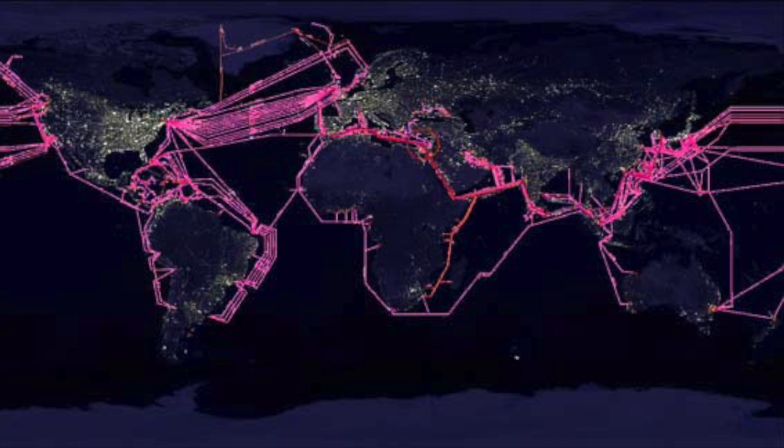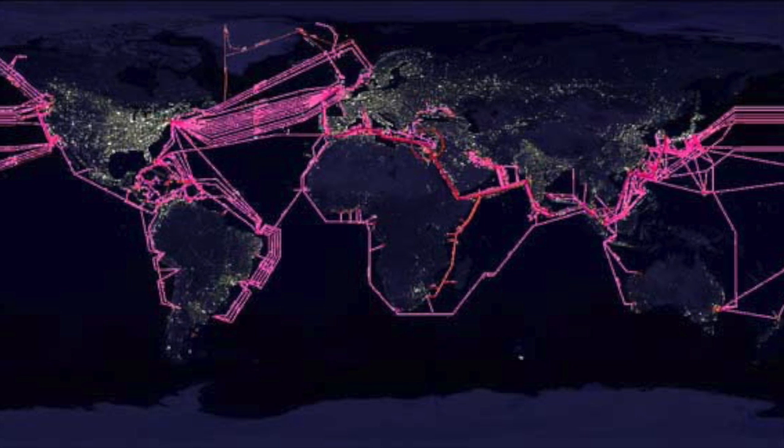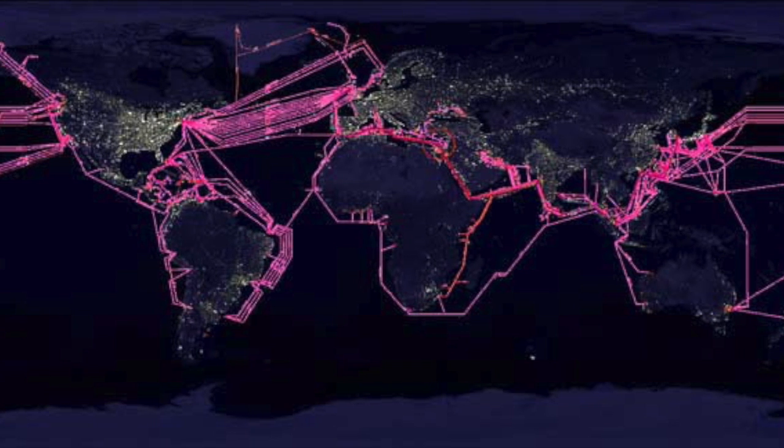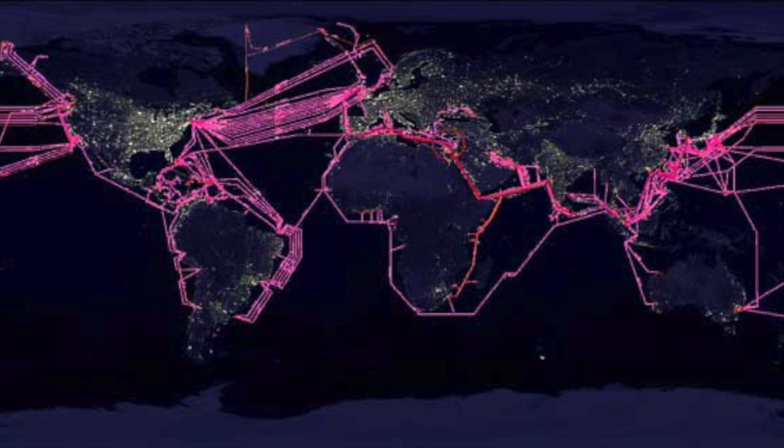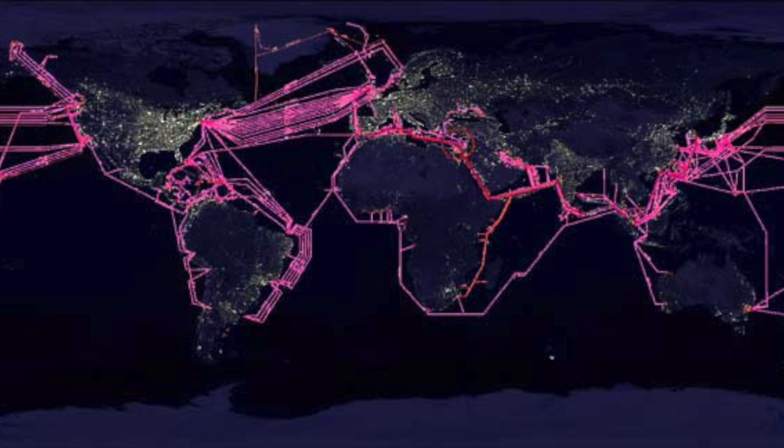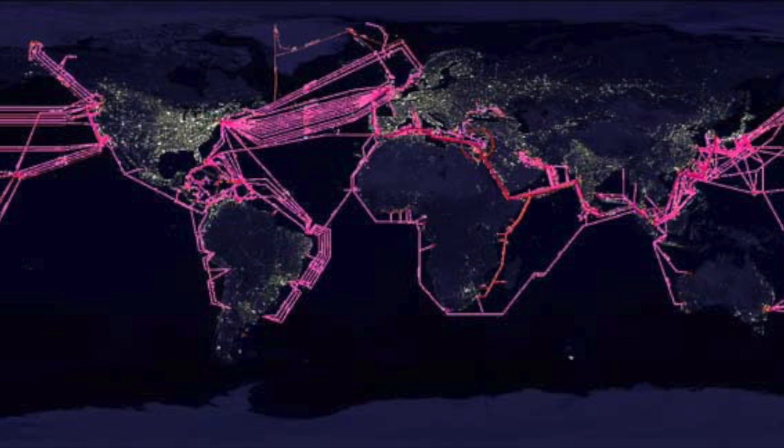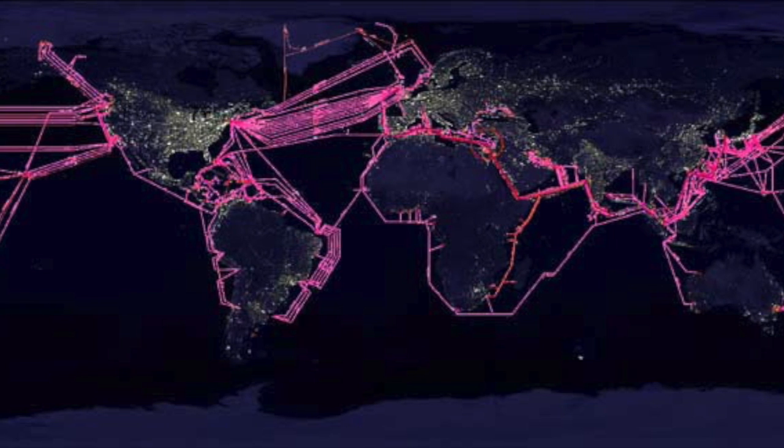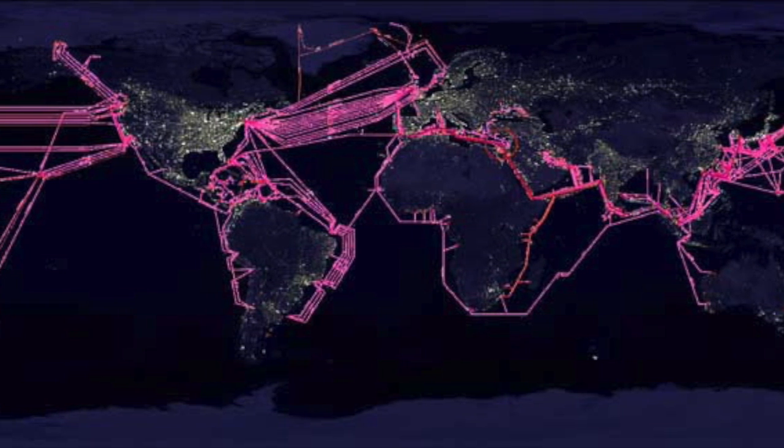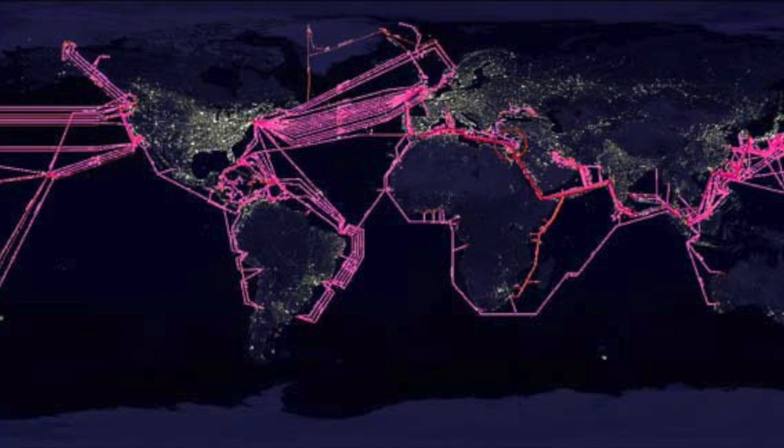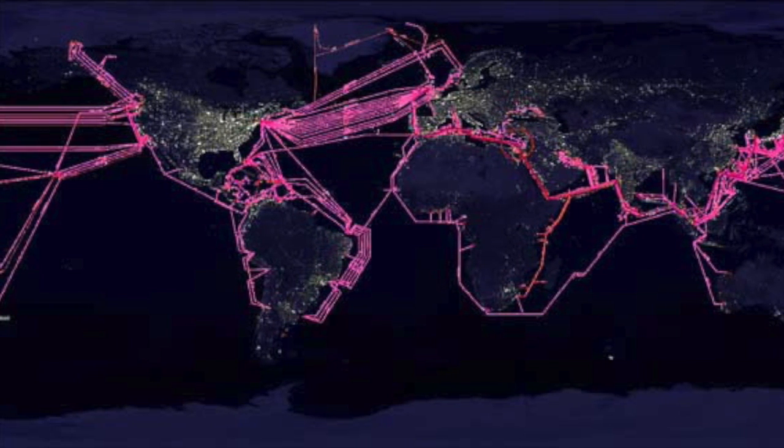The world communicates over fiber optics. This map of all the submarine cables around the world projected on top of a map shot from the international space station of the world at night shows how all the population centers in the world communicate. They're connected on optical fiber.